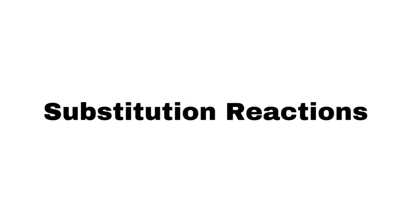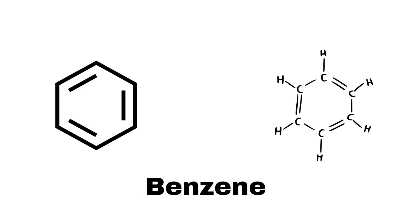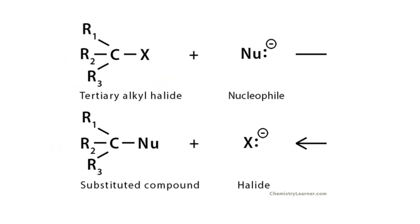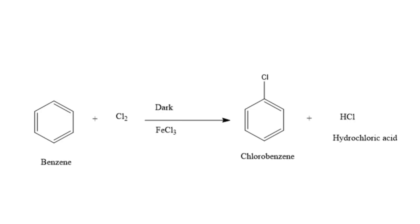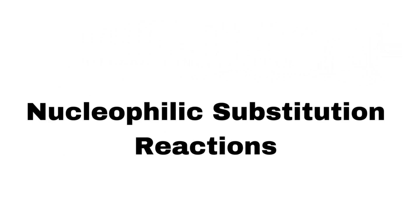In substitution reactions, one atom or group of atoms in a molecule is replaced by another atom or group of atoms. These reactions are common in saturated compounds like alkanes and aromatic compounds. For example, in nucleophilic substitution reactions, a nucleophile replaces a leaving group in a molecule. In electrophilic substitution reactions, an electrophile replaces a hydrogen atom in an aromatic ring. The reaction of chloromethane with hydroxide ion to produce methanol is an example of nucleophilic substitution.